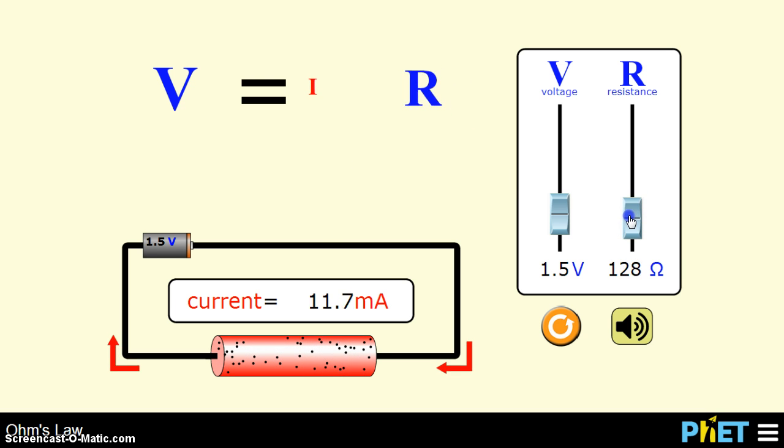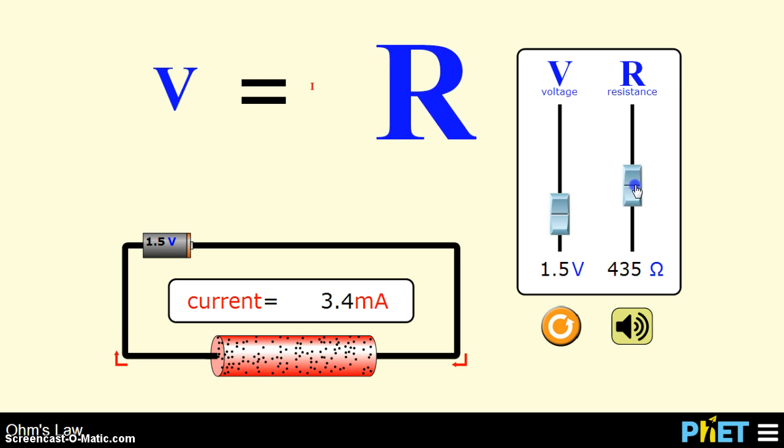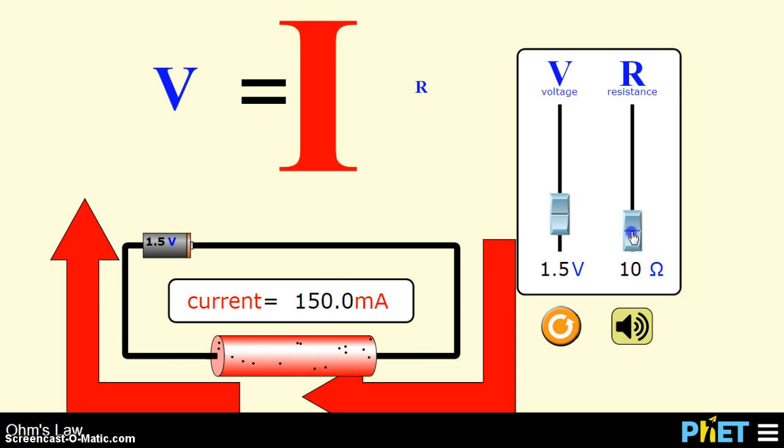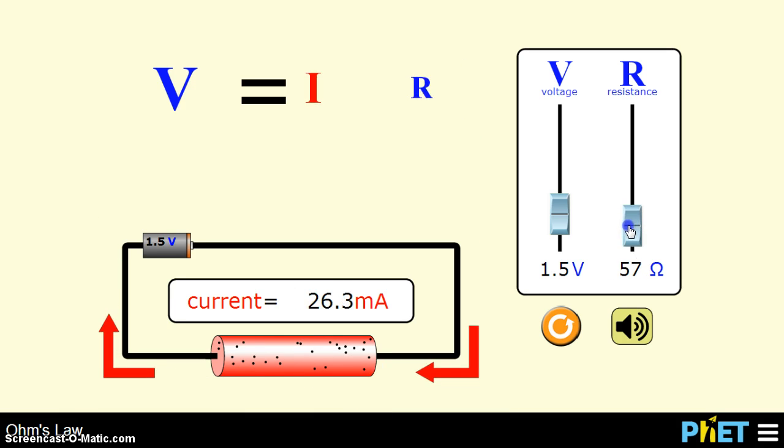So we'll bring it down to where we were roughly, and once again, from this equation at the top you can see that as the resistance goes up, the current goes down. As the resistance goes down, the current goes up, and that's because the two are inversely proportional. When you multiply the two, you have a constant value of voltage here.